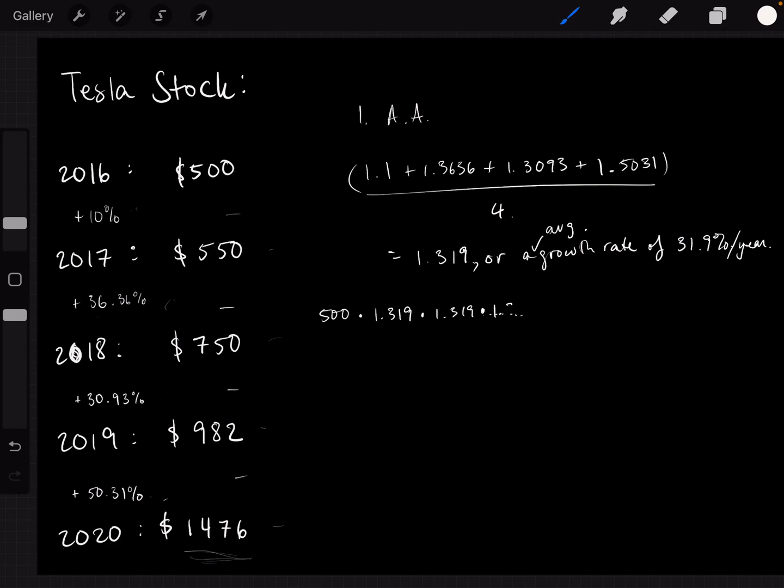Four times. I should write this up. Times 1.319 times 1.319, times 1.319. Let's see, I'm going to type it into my calculator. You get 1513.38. So when you use the arithmetic average, you get this number. And of course, there's a big difference between 1,513 and 1476.